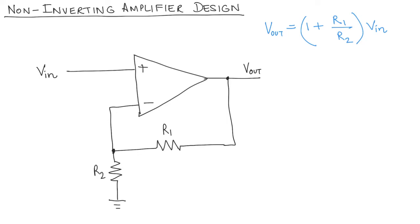Hi, in the previous video we looked at how a non-inverting amplifier works. The output of the non-inverting amplifier is given by this equation. Let's say you want a gain of 2 — you can have R1 equal to R2. If you have R1 equal to R2, you get V out equal to twice V in.